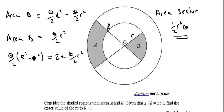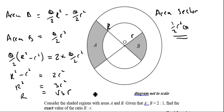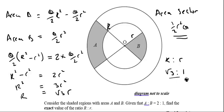Rearranging, we get R² − r² = 2r², so R² = 3r², therefore R = √3 · r. The ratio of R to r is therefore √3 : 1. If r is 1, then big R is √3. That's the final ratio.